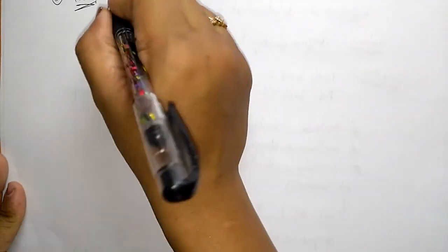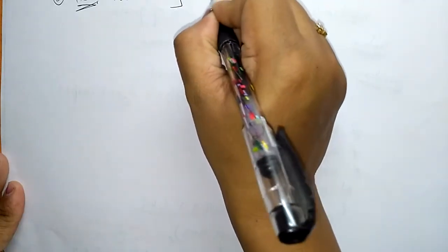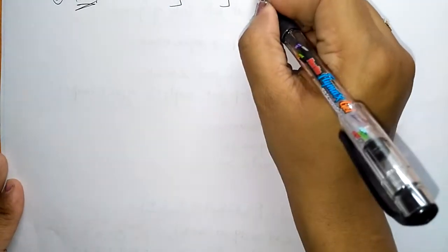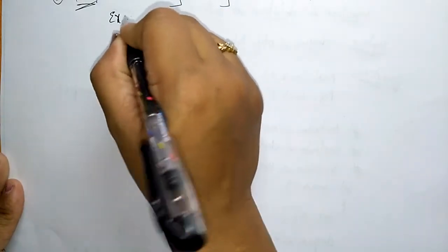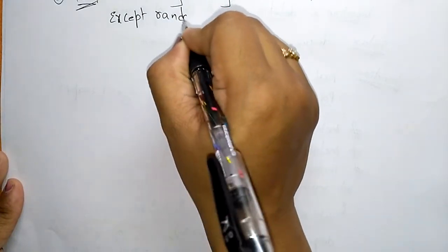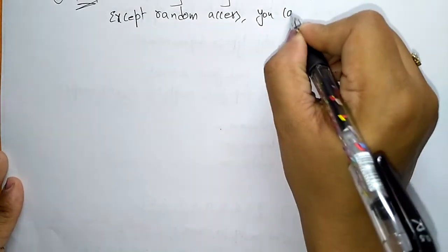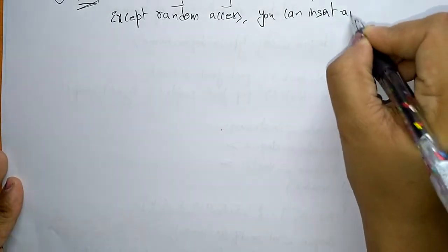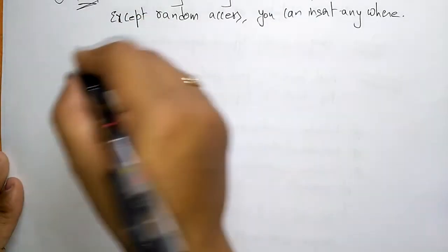The list is traditionally a doubly linked list. Do not expect random access here, because it is a doubly linked list. You can insert anywhere in the list.